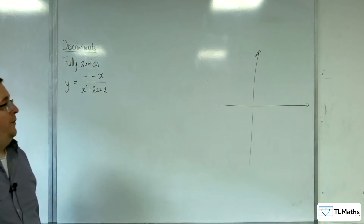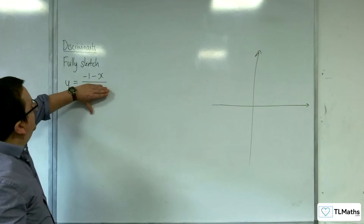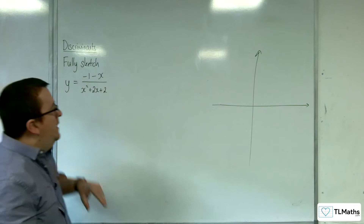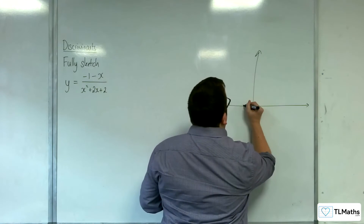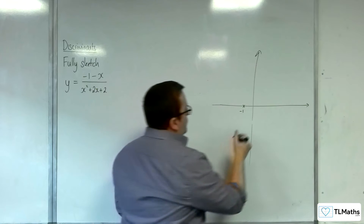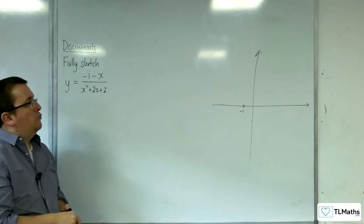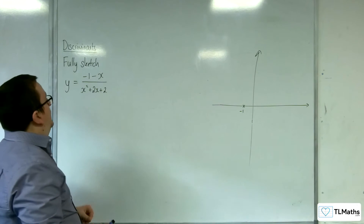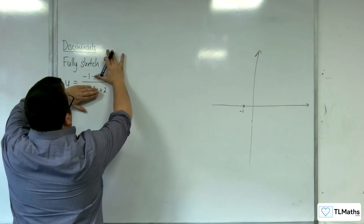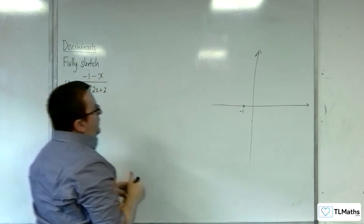How about where it crosses the x-axis? That's when y is 0, so that would be at x equals minus 1. How about where it crosses the y-axis? That's when x is 0, so we would have minus 1 over 2, giving minus 1 half.